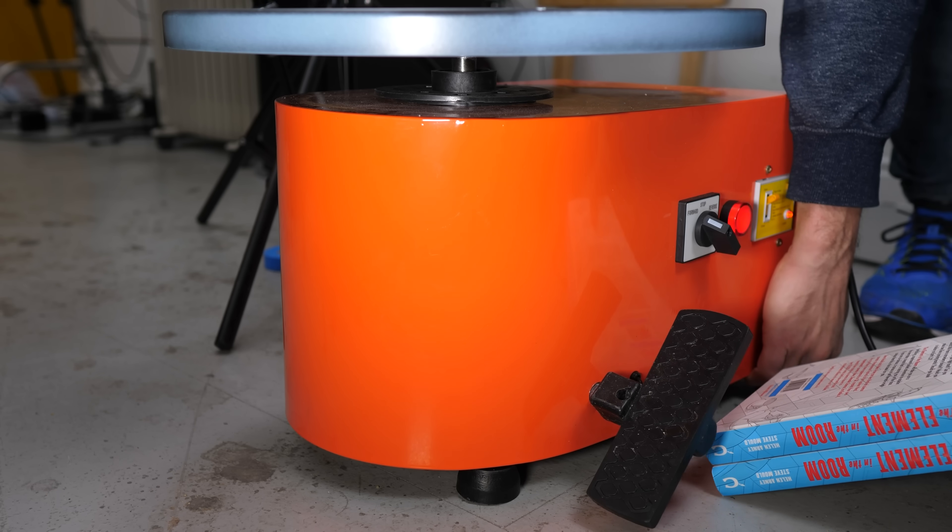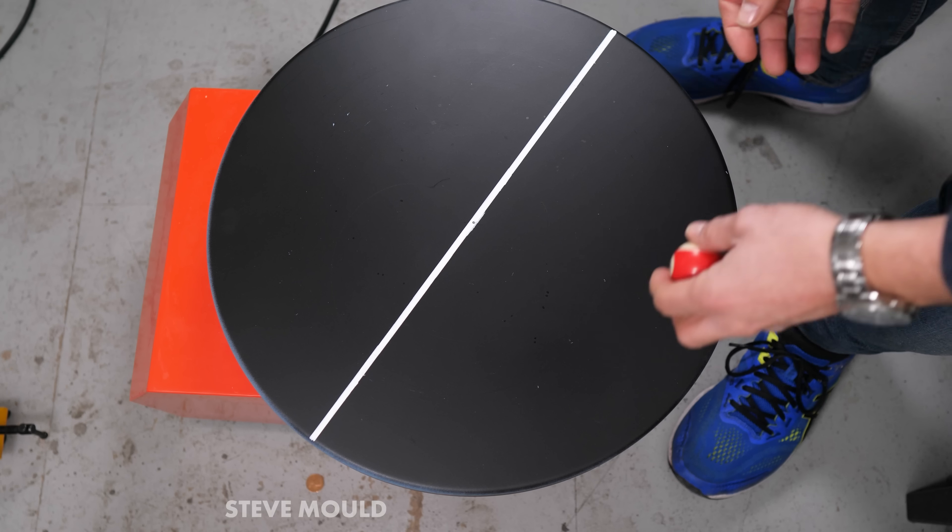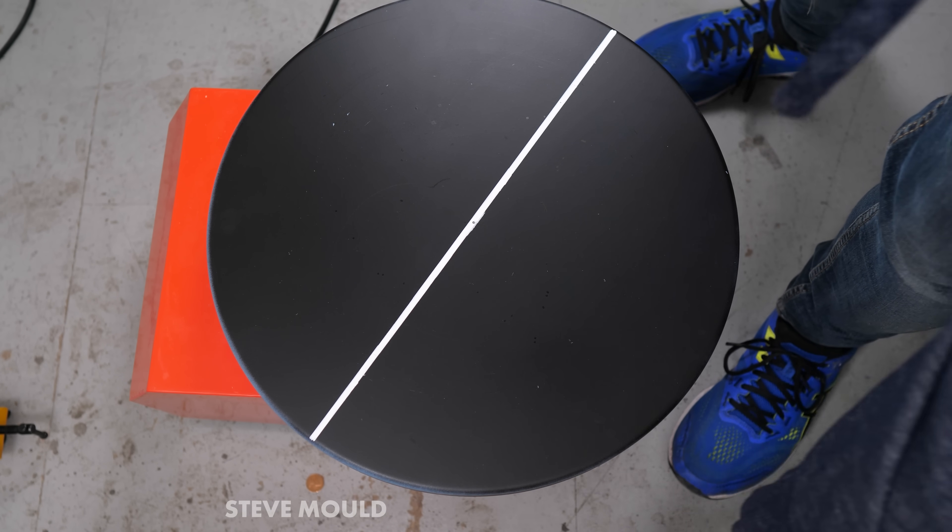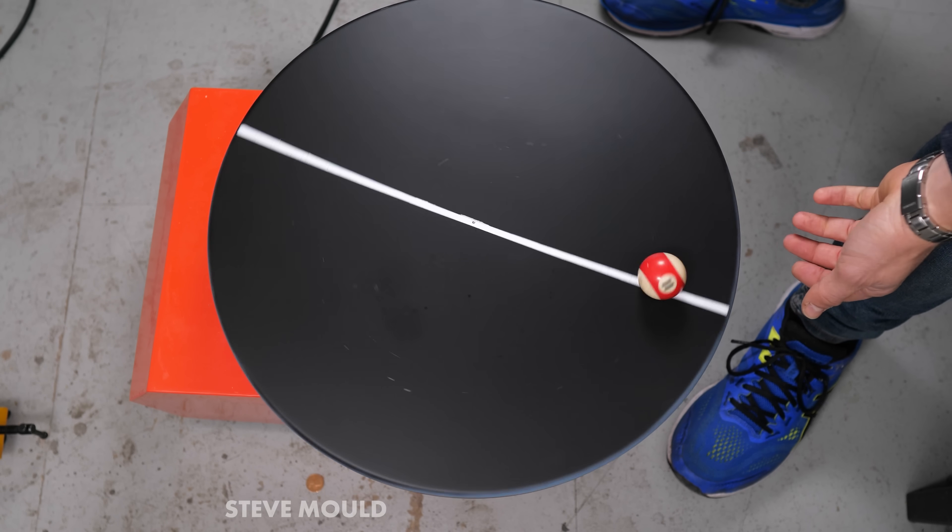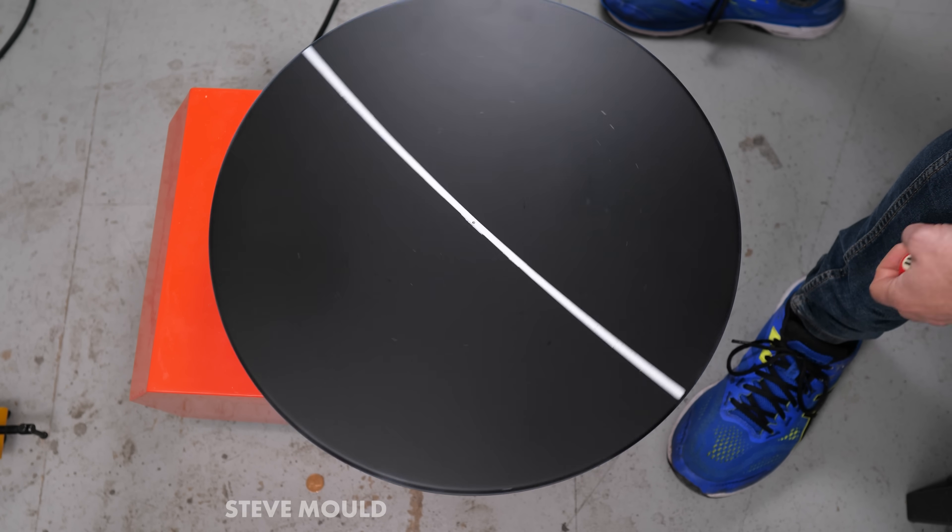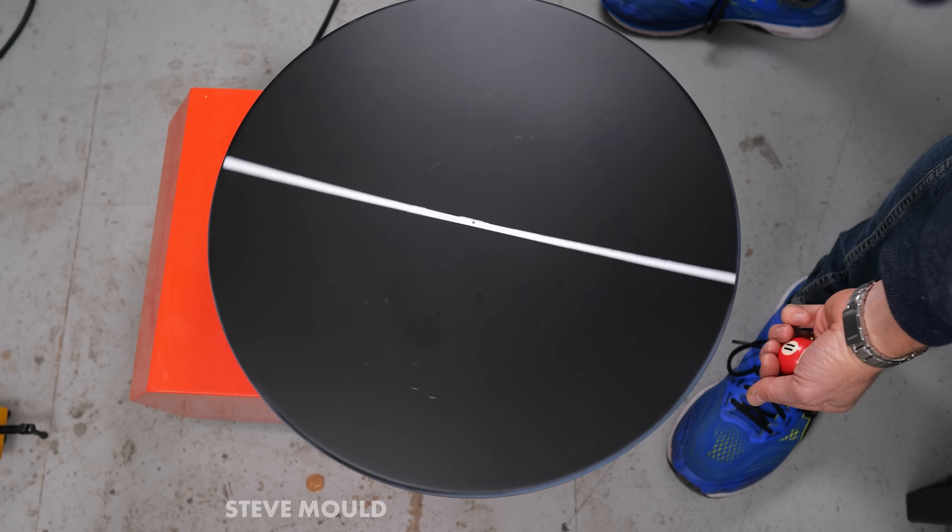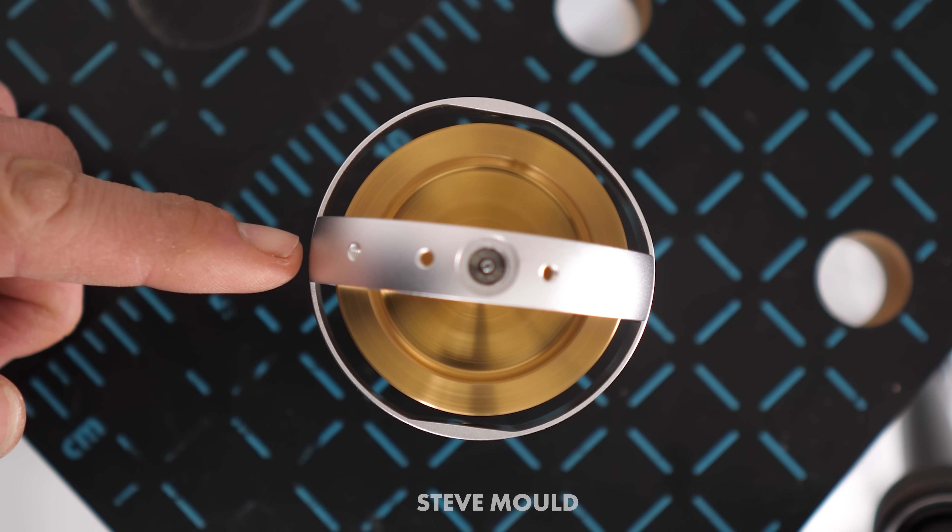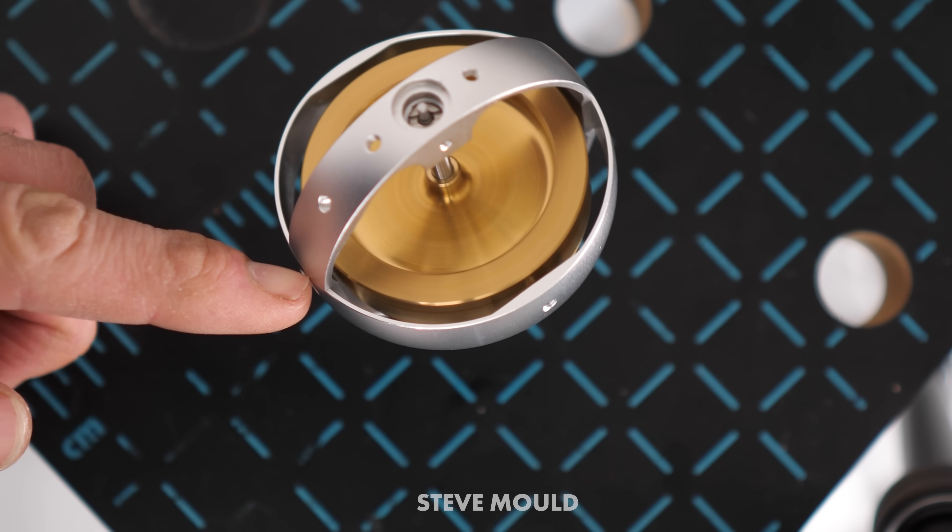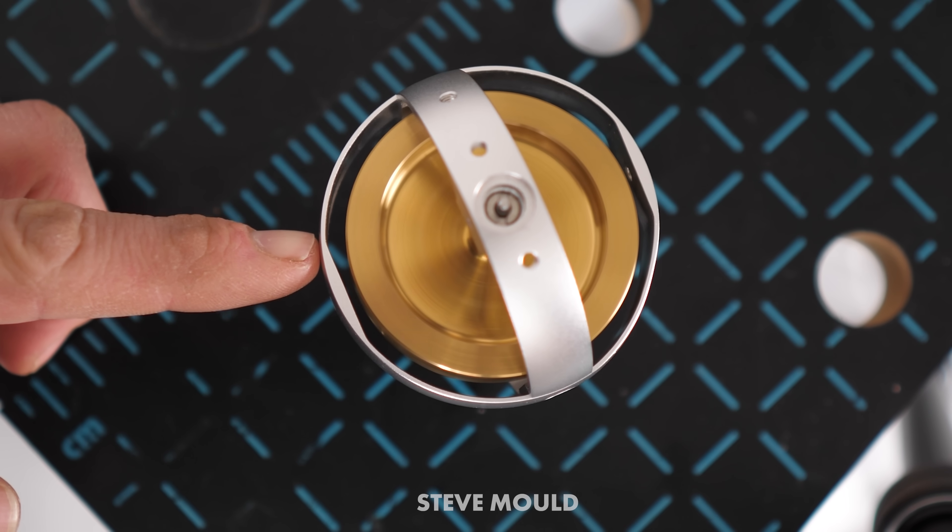Something else quite cool is if you tilt the turntable. Look, if the turntable isn't spinning and I tilt it, obviously the ball rolls off. But look, when the turntable is spinning, instead of the ball rolling in the direction of the tilt, it rolls perpendicular to that. Which is very reminiscent of gyroscopes, isn't it? When you apply a force to a gyroscope in one direction, it moves perpendicular to that. That's elegant, isn't it? Or maybe it's a coincidence. I don't know. I mean, surely there's a link there.